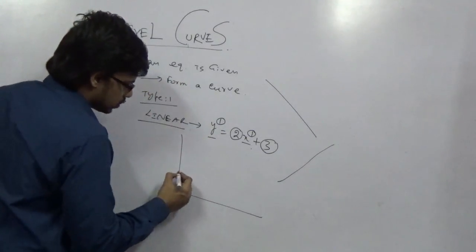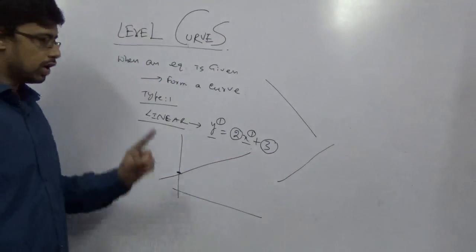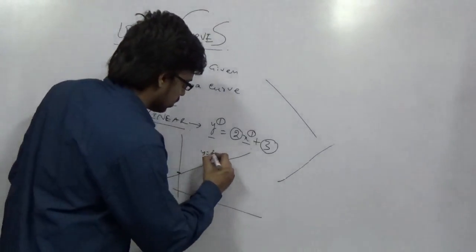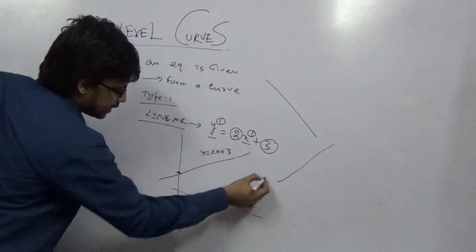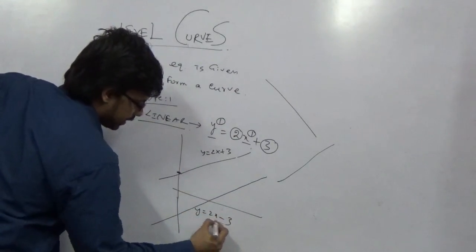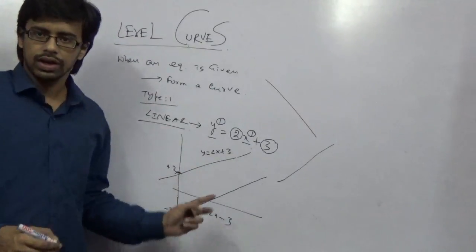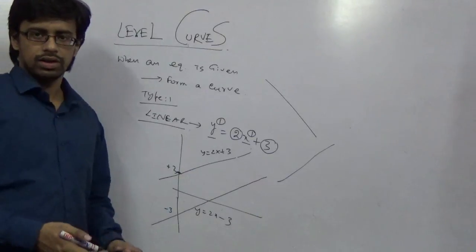This one is plus 3. So it will go up. It will intersect from here and it will be upward sloping. Now what are the variants? What will be the curve? This is y equal to 2x plus 3. In case y equal to 2x minus 3, then this area is minus 3. This is plus 3. So this is all about a linear level curve.